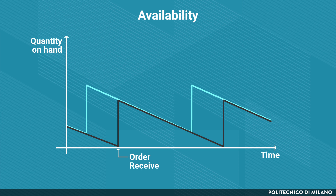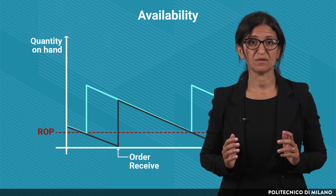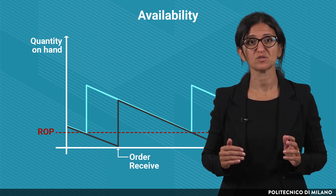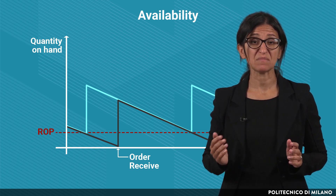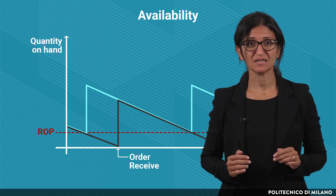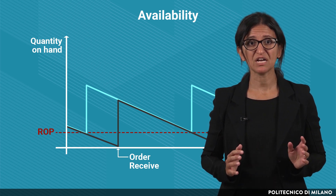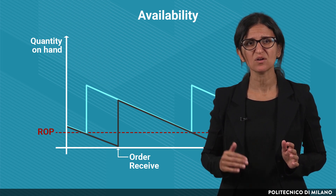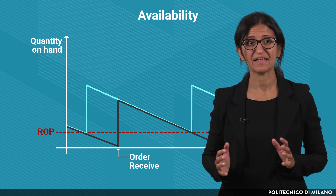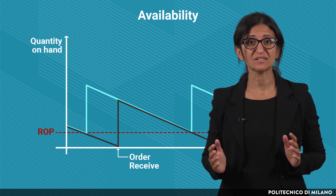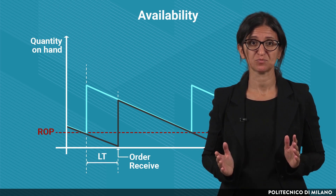As stated at the beginning of the lecture, the orders are issued when the availability goes under the reorder point. The availability represents the virtual quantity on hand. In fact, the availability also includes the amount of goods that have already been ordered but have not yet entered the warehouse. The expected path of availability is the same as the inventory level, but shifts both horizontally and vertically. Horizontally, because the availability increases when the order takes place, not when the products enter the warehouse. So the availability increases before the physical inventory, and the horizontal distance between the two paths is the replenishment lead time.